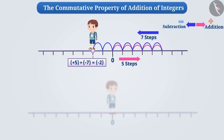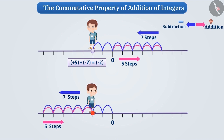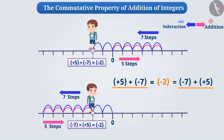If he went backward seven steps and then moved forward five steps, he would still reach a point minus two, because minus seven plus plus five is equal to minus two. Looking at both these conditions, we can say that plus five plus minus seven and minus seven plus plus five are equal. We can add plus five and minus seven in any order and the result will be equal.